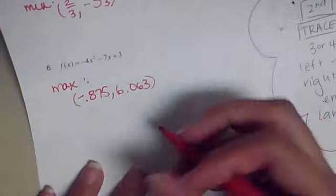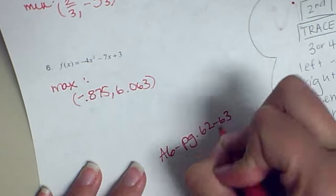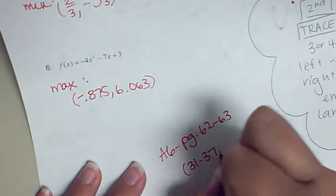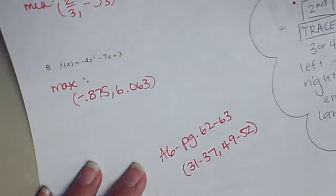That's it for today's lesson. Your assignment was A6. It's out of the book. That's page 62 and 63, numbers 31 to 37 and 49 to 52. Good luck and let me know if you have questions.